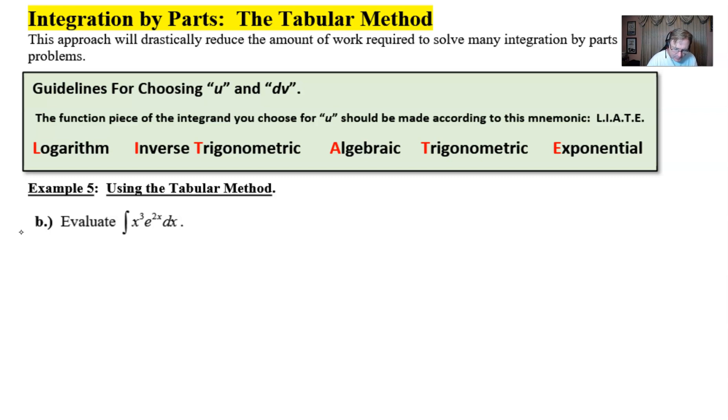If you recall from the previous video we talked about setting up your table using headings like plus minus, a heading called u and a heading called dv. Now it's not mandatory that you write these but it does help organize the findings in your table. The plus or minus column simply consists of alternating signs plus minus plus minus checkerboard effect.